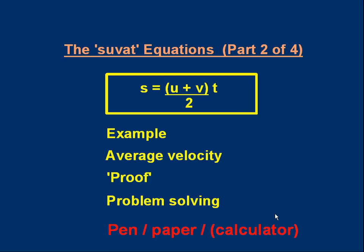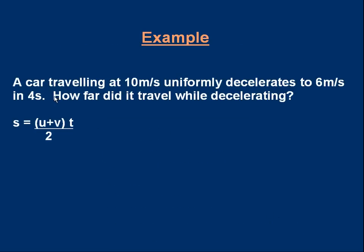Let's start with a very simple example of using the equation. A car traveling at 10 meters per second uniformly decelerates to 6 meters per second in 4 seconds. How far did the car travel while decelerating? There's the formula. Pause the video, try that for yourself.